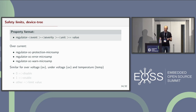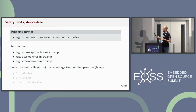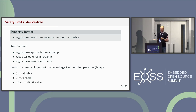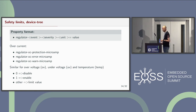Setting these limits can be done via device tree. The property format is: regulator-event, then the severity, then the unit. The event itself can be one of four: over-voltage, under-voltage, temperature, or over-current. We get a value for these properties, where zero means disable, one means enable, and all other values are the actual limit value to be configured in hardware.